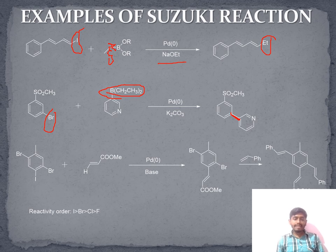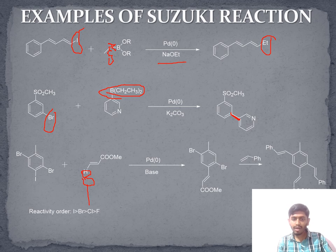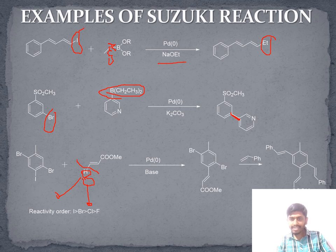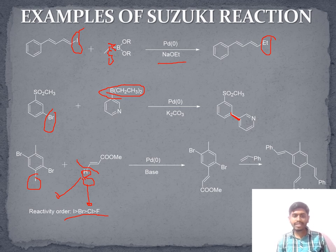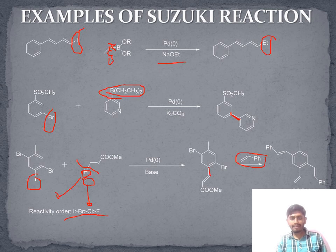The third example is an interesting one. Here, in place of hydrogen there is a boron attached with two groups that may be OR or OH. This bond is broken and that group is attached first to the iodine position, because the reactivity order is: iodine > bromine > chlorine > fluorine. So that is why the first bond formation takes place at the iodine position.